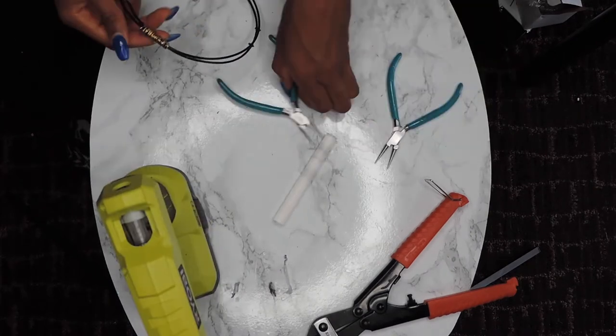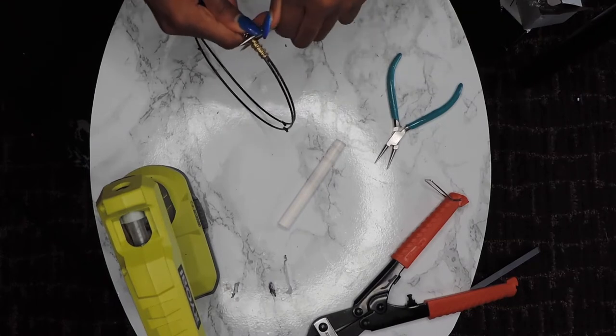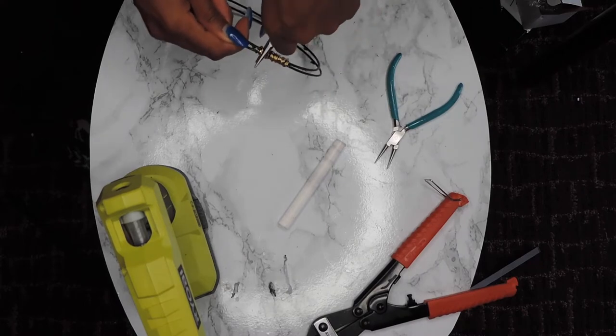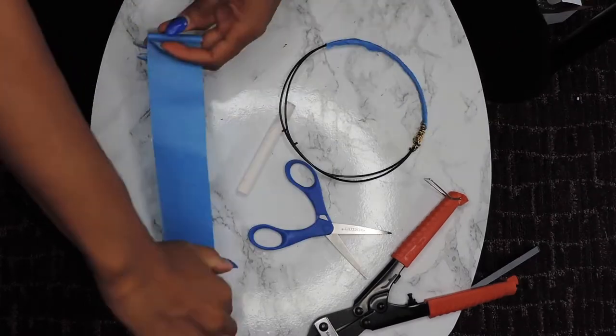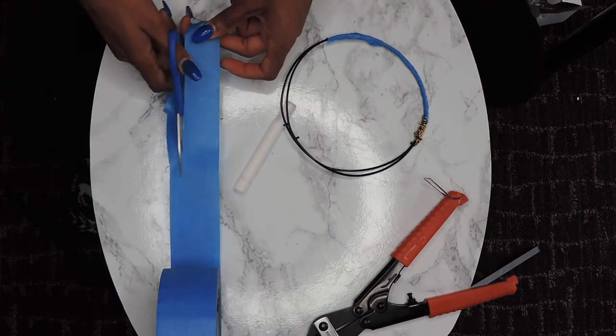So I use my jewelry pliers to just kind of push everything together and make sure that's not going anywhere. And it hasn't, I was so glad that I used this wire. I had it on hand, so now I guess it's not a chandelier DIY for me if we don't use painter's tape.